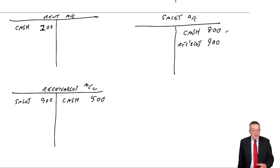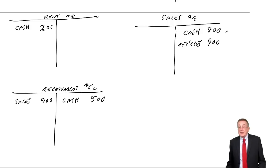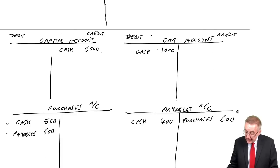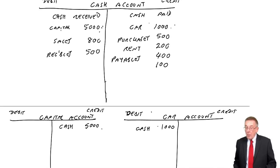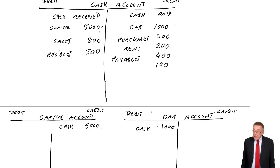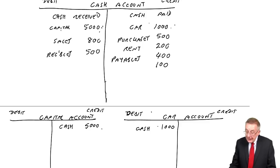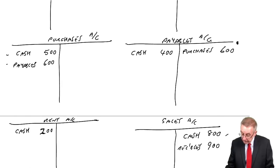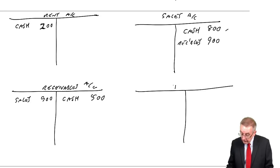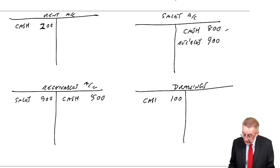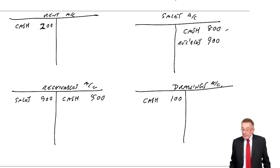Finally, Christine — remember, Christine's the owner — withdraws £100 cash from the business. First effect: we've less cash — credit cash. The double entry: anything the owner takes is withdrawals or drawings. So to record the fact that there's drawings of 100, debit drawings.